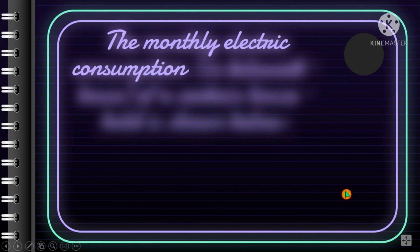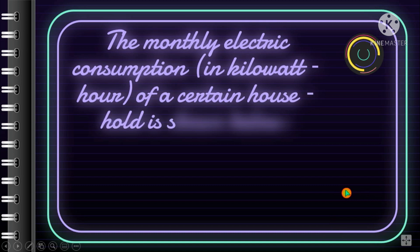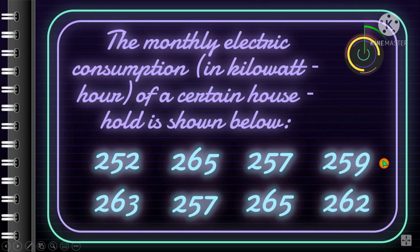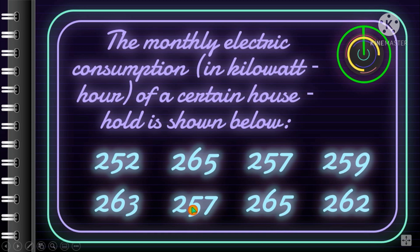For the monthly electric consumption data of a certain household — the mode is 257 and 265, since both values appear twice. So the mode is 257 and 265, and that is bimodal.